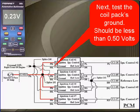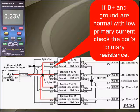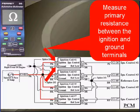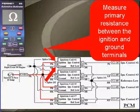Next, test the coil pack's ground. It should be less than a half volt. If B+ and grounds are normal with low primary current, check the coil's primary resistance. You do that by measuring between the ignition and the ground terminals.